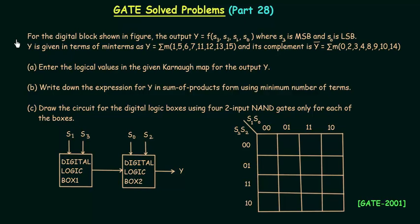In this part, I will deal with a KMAP problem that appeared in the 2001 exam. For the digital block shown in the figure, the output Y is a function of S3, S2, S1, and S0. These are the four inputs, where S3 is the MSB (most significant bit) and S0 is the LSB (least significant bit). Y is given in terms of minterms.